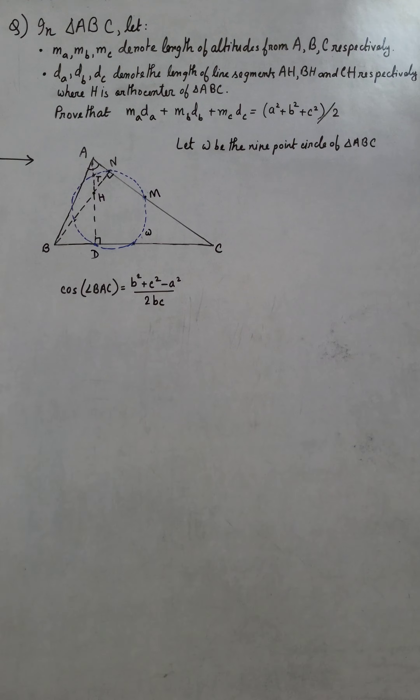By the properties of the 9-point circle, we have that D, M, N, and T lie on a circle, which means they are cyclic. As a result, we have AT times AD equals AN times AM.